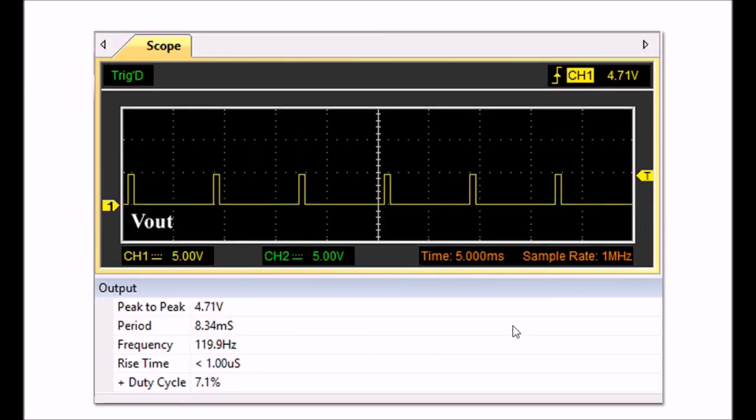This is what this looks like on my digital oscilloscope. Clean 7% duty cycle pulse, period from here to here, 8.34 milliseconds. It's at 120 hertz, my rise time less than a microsecond.